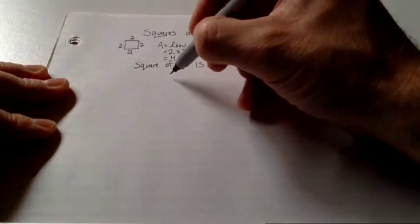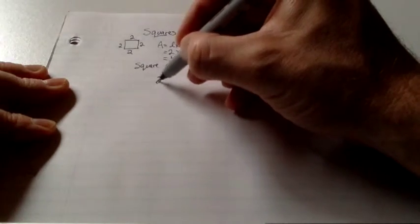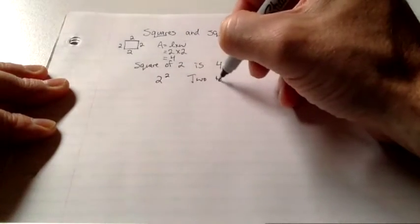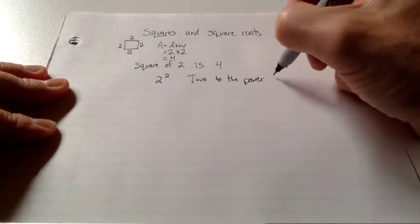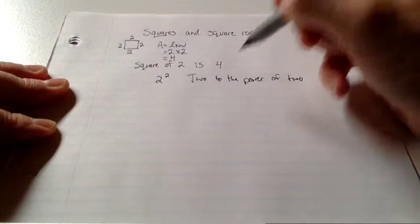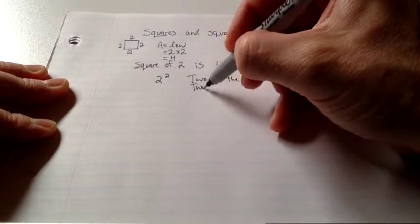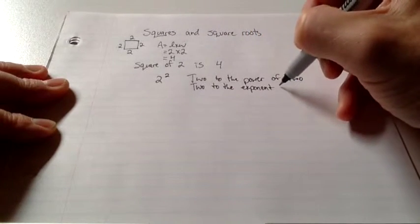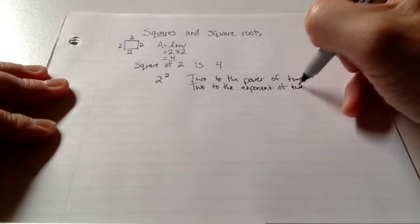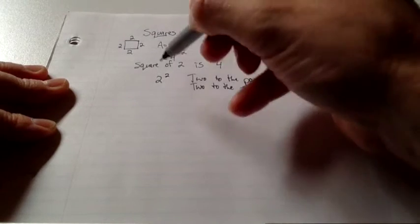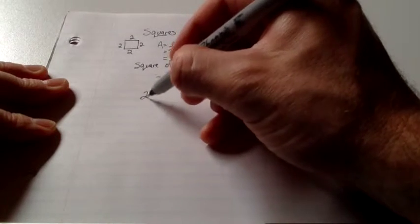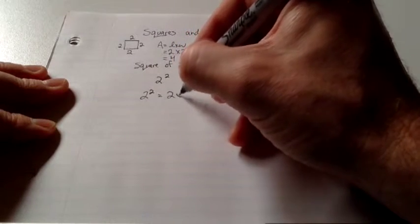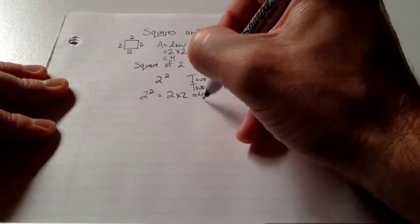Another way to look at it, and another way that we will represent it, is 2 to the power of 2, or 2 to the exponent of 2. And what happens is, we have 2 to the exponent of 2, or 2 to the power of 2. And that means 2 times 2. And that is 4.